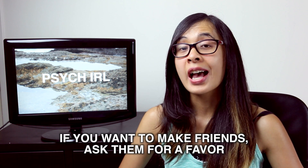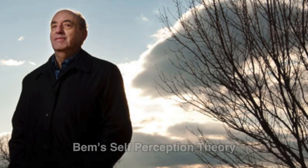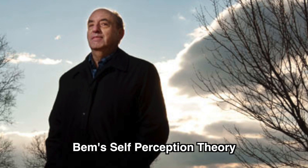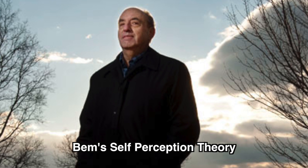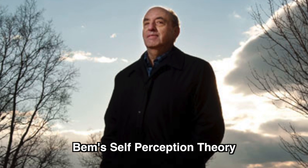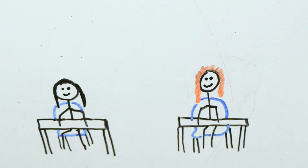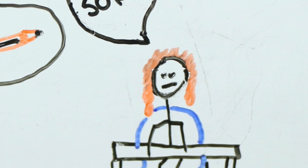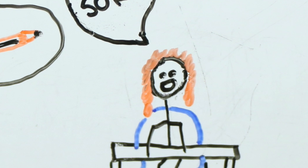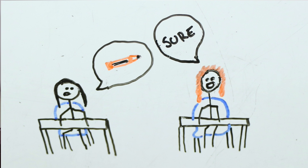Number three: if you want to make friends, ask them to do you a favor. Cognitive dissonance can also be a conflicting thought and a conflicting behavior. BEM's self-perception theory says people come to know their own attitudes by looking at their behavior and the context in which it occurred, and inferring what their attitude must be. For example: 'Hey, can I borrow a pencil?' 'Sure.' Then they think, 'Wait, why did I just let her borrow a pencil? Oh — I must like her and want to be her friend.'